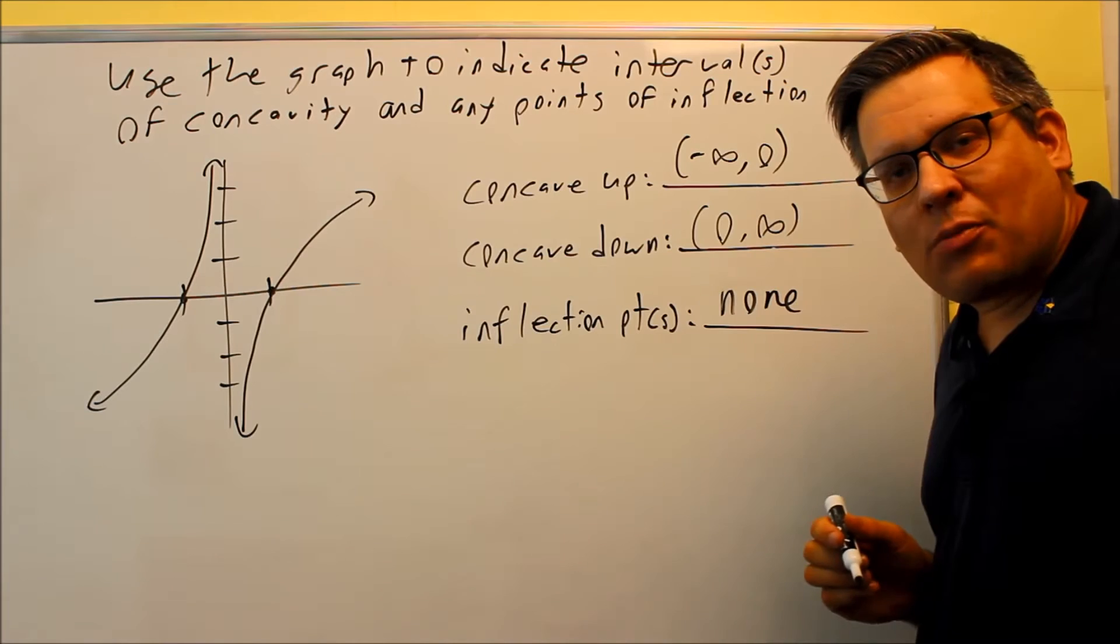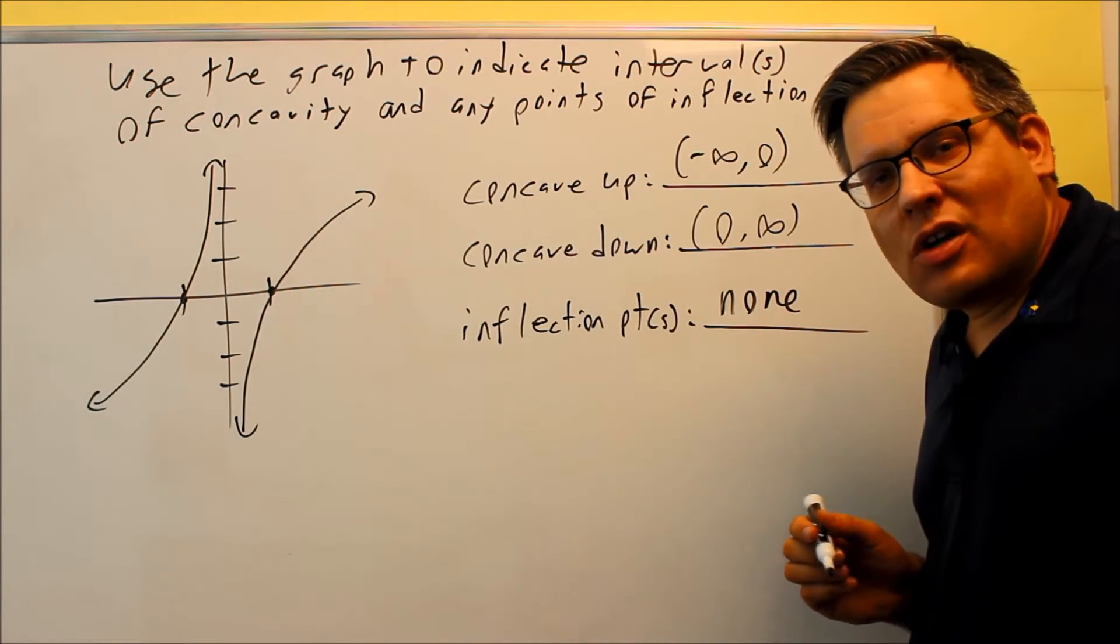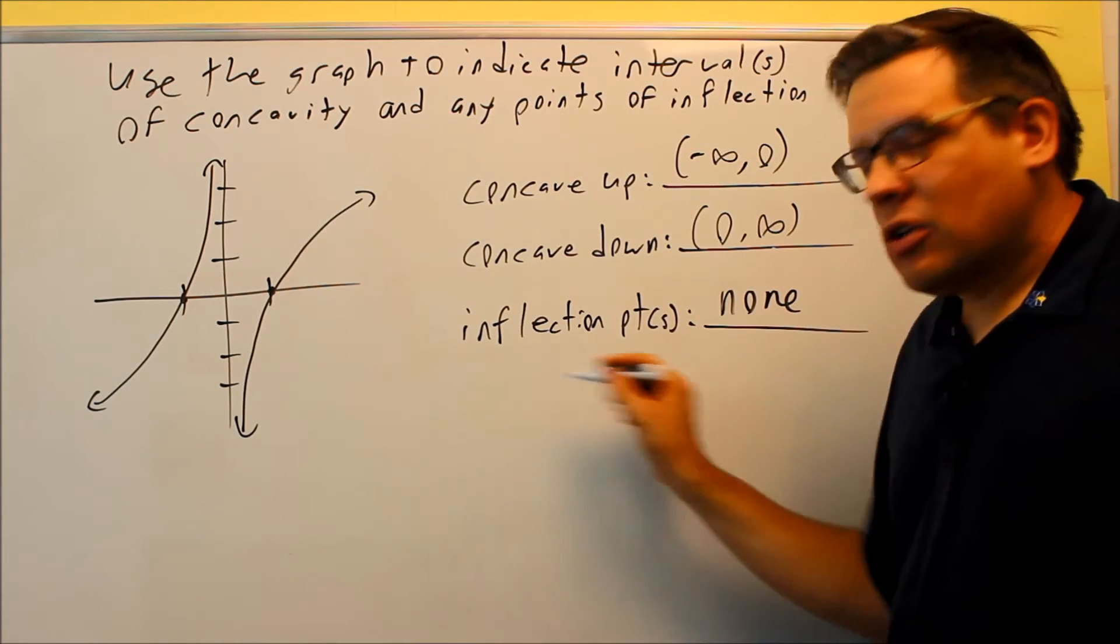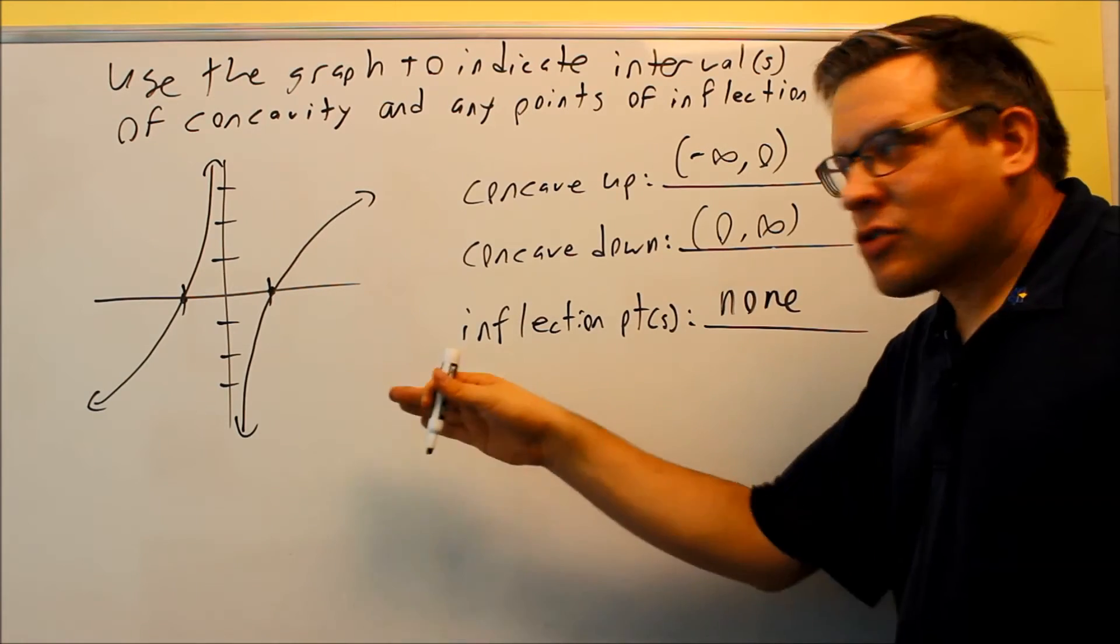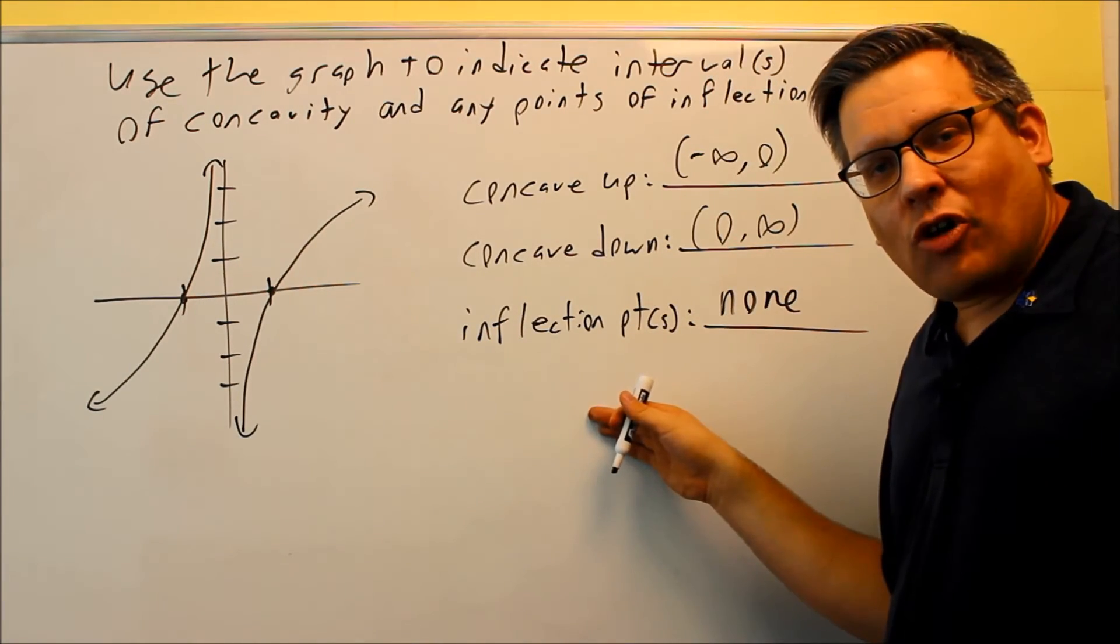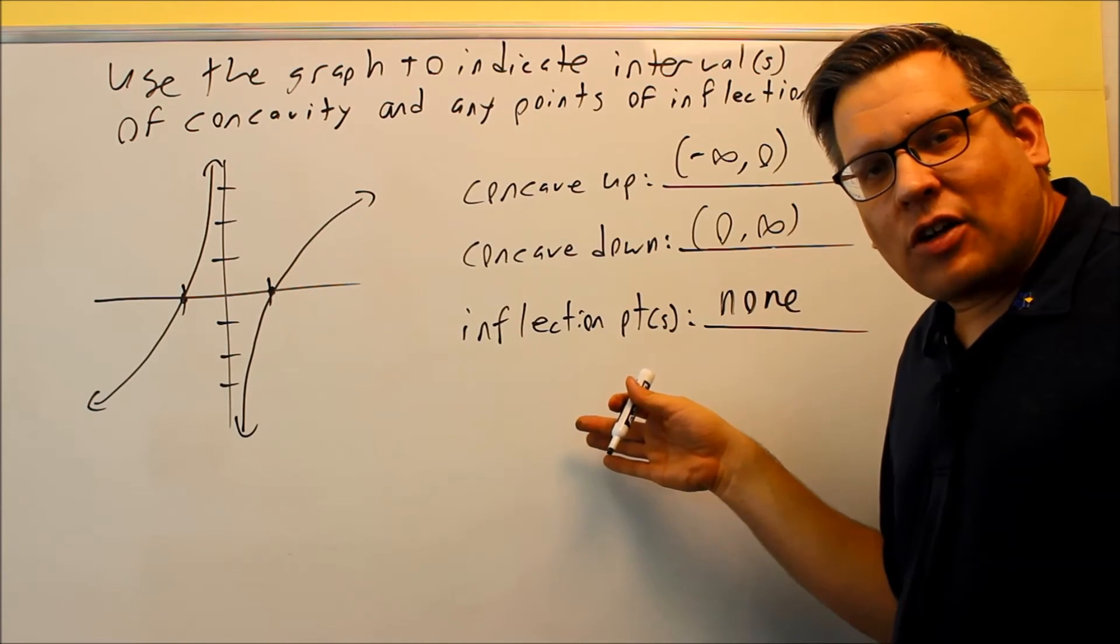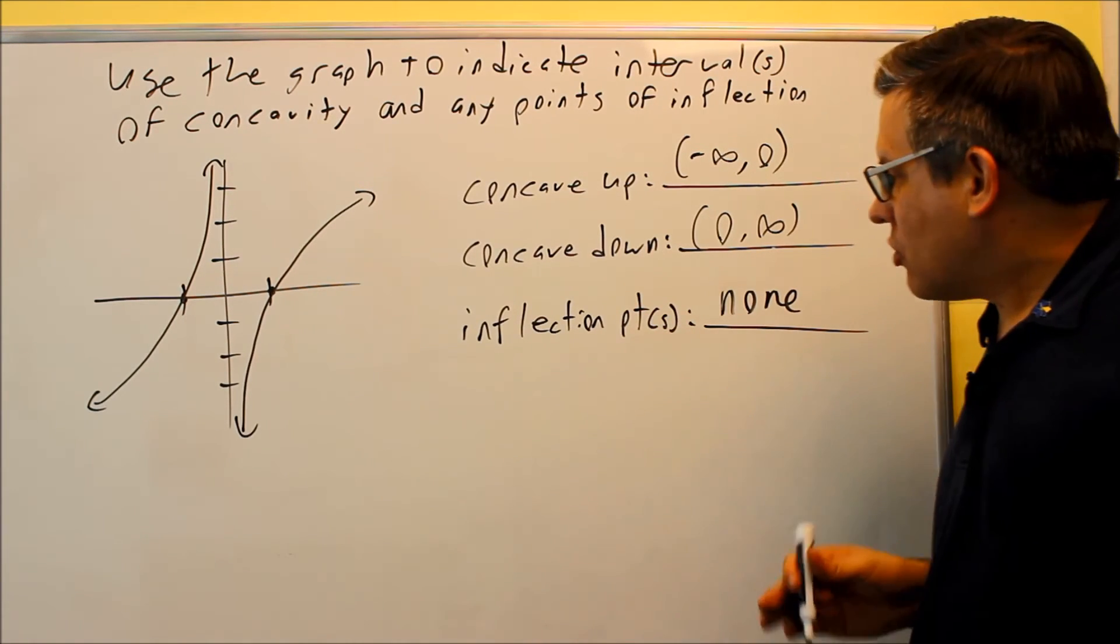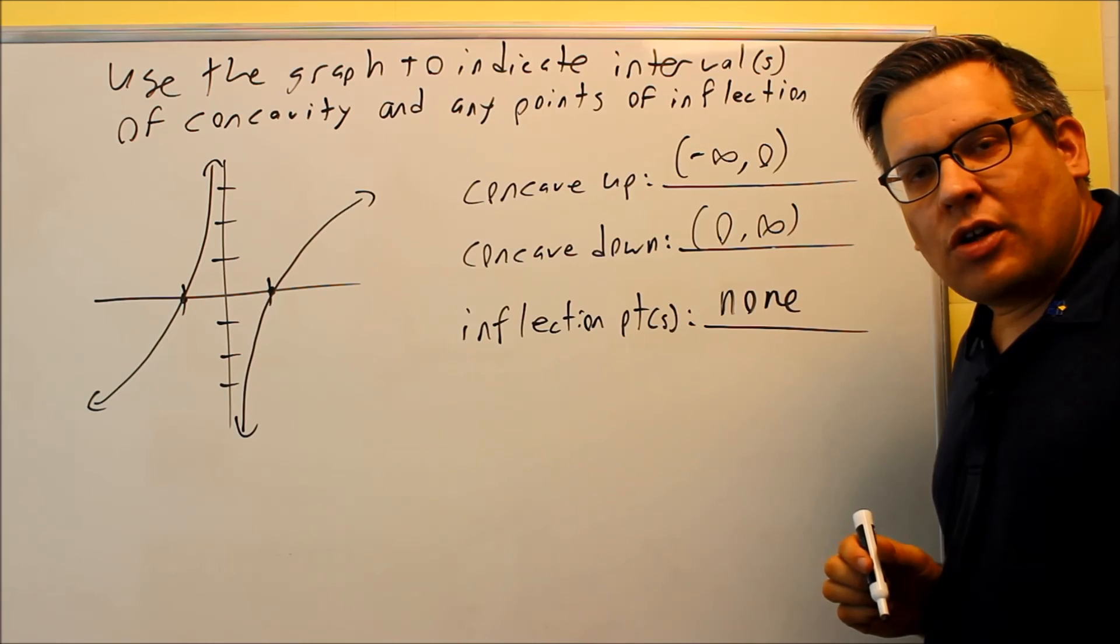So we're going to take a look at some examples later on in this section where that happens. What would happen there is you would have your sign chart, you'd have a plus, in this case you'd have a plus and a minus, dividing it up at 0, but because 0 is not defined on the original one, it's not considered an inflection point, so again, that's why there's none here in this case.